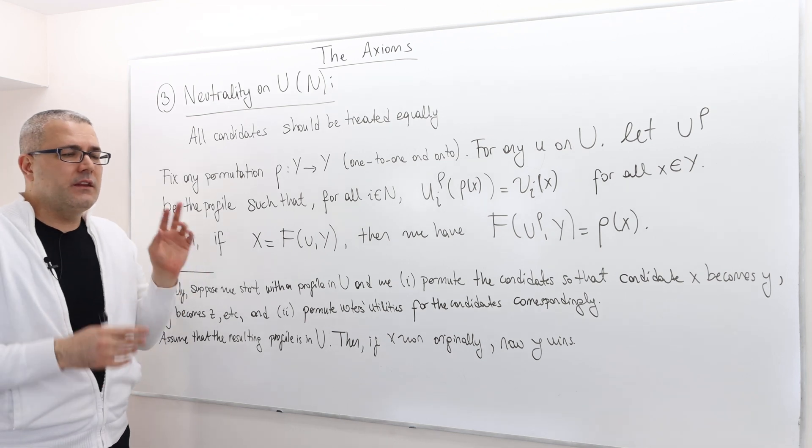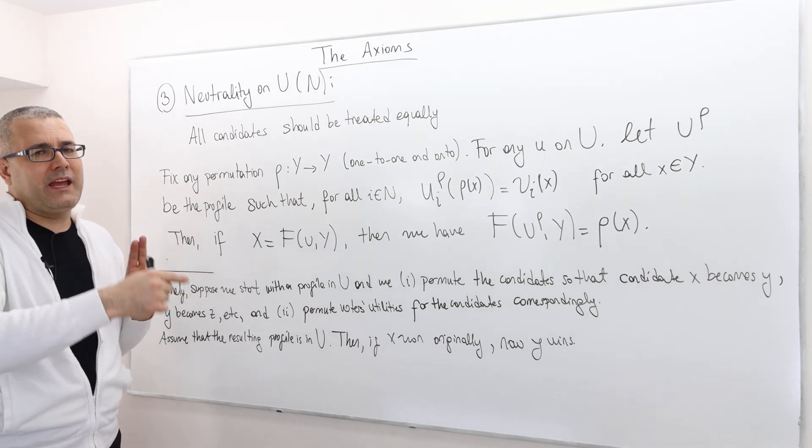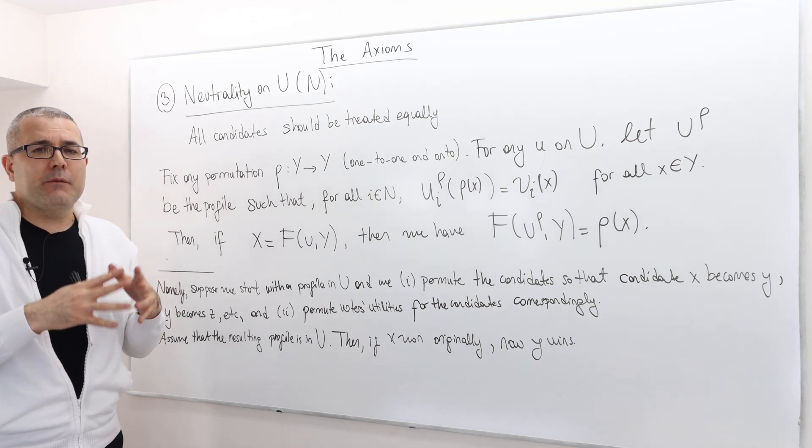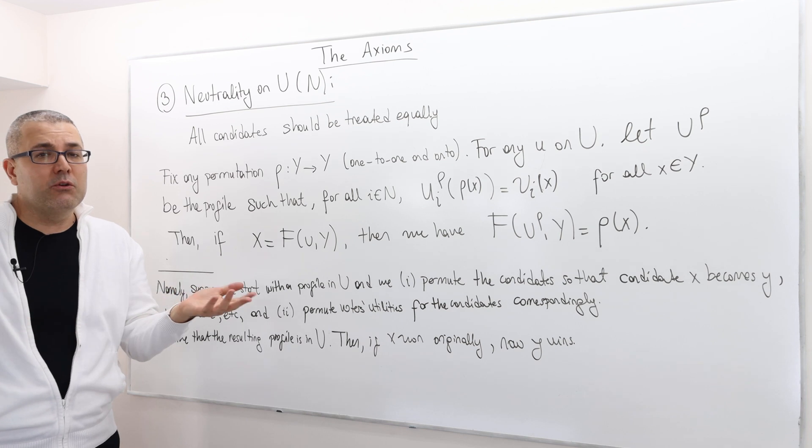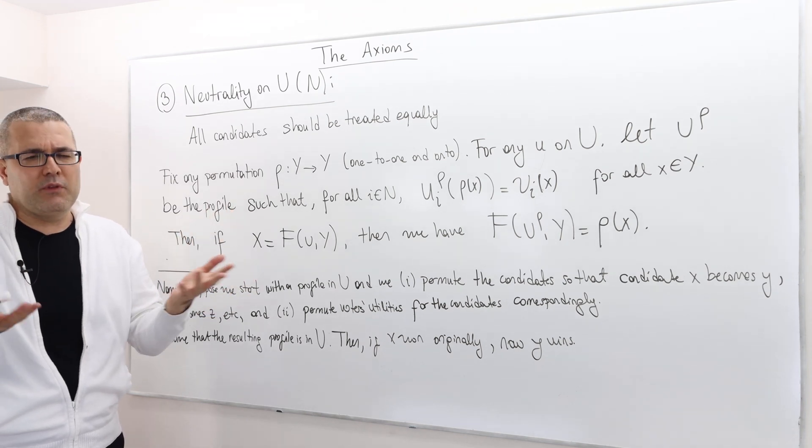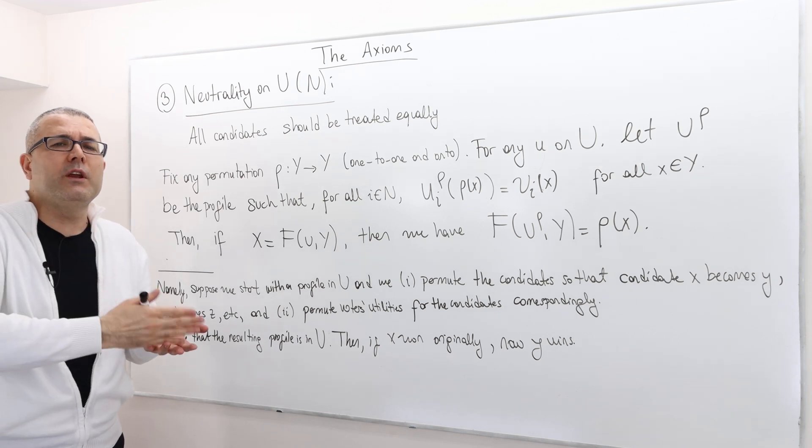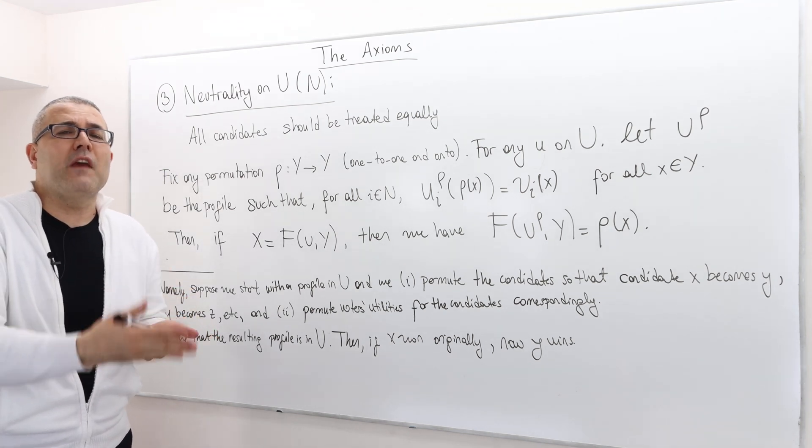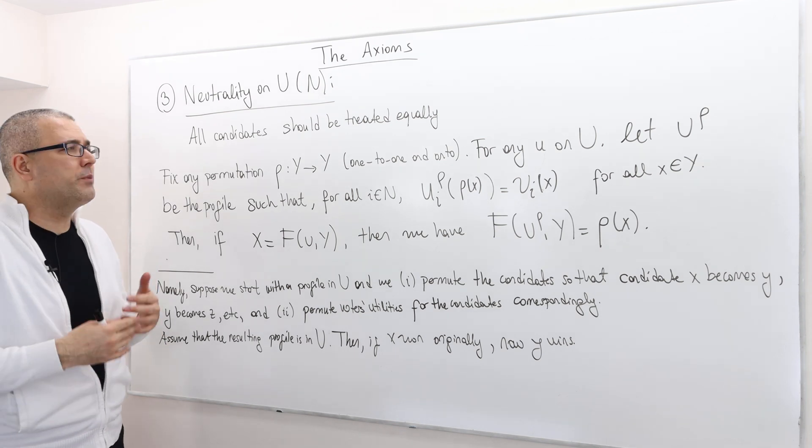Well, here, don't forget, the voting rule should treat all candidates equally. So it's not about the election—all candidates being treated equally in the election. No, we know that this is usually, in reality, not the case. But the voting rule itself shouldn't favor any candidate. And so they all should be treated equally.